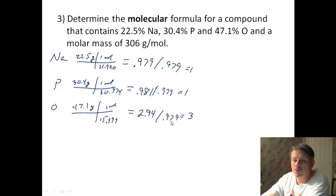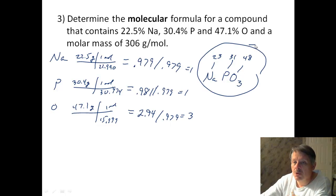So if I divide by 0.979, and divide by 0.979, these both give me 1, and in fact, it does give me 3. So I have a one-to-one-to-three relationship, which is NaPO3. Well, sodium weighs 23, and phosphorus weighs 31, and oxygen, three of them weigh 48. So I add those all together, and the empirical formula weighs 102 grams per mole.